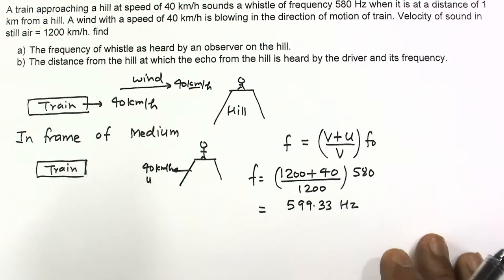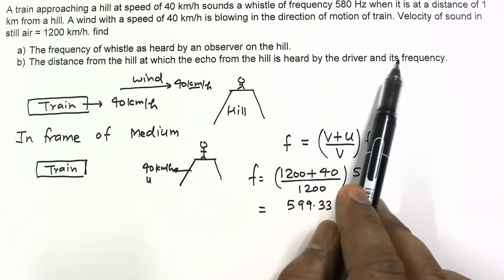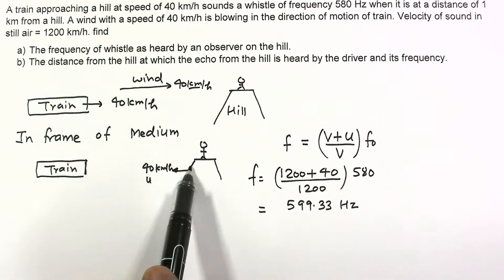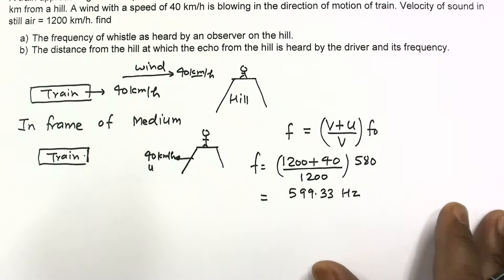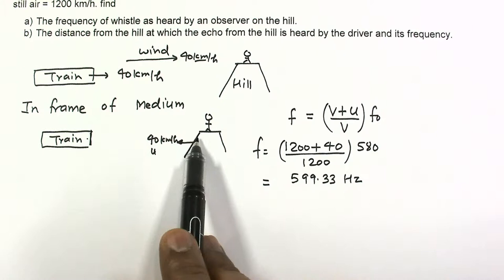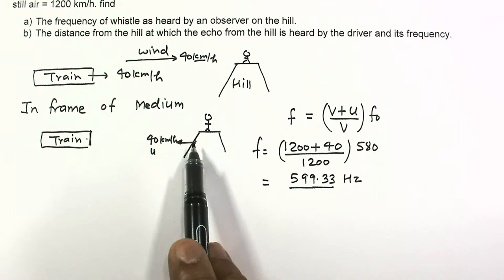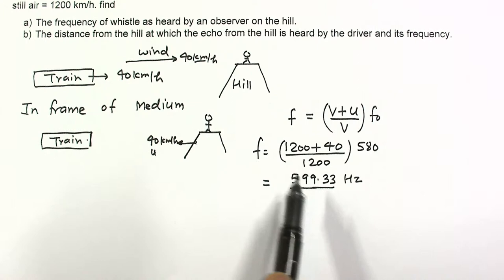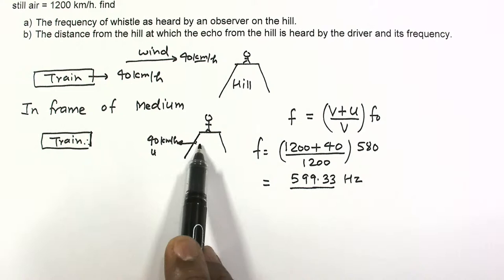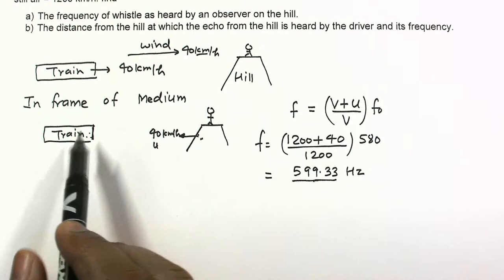This is the frequency heard by the observer on the hill. Now for the second part — the frequency heard by the driver. The sound waves are reflected from the hill and heard by the driver. In this case, first we find the frequency received by the hill. The frequency incident on the hill is 599.33 Hz. This hill now becomes a source of that frequency, moving towards the driver, who is now the observer.